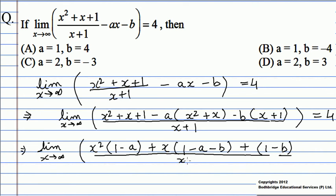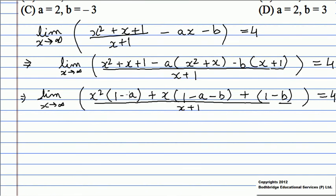Clearly, the limiting value is finite. So the highest degree in the numerator and denominator will be the same. Therefore, the coefficient of x² equals 0. That is, 1 minus a equals 0, giving us a equals 1.